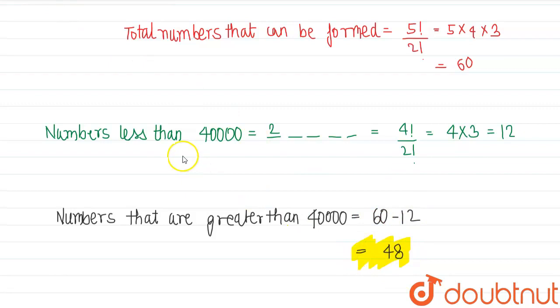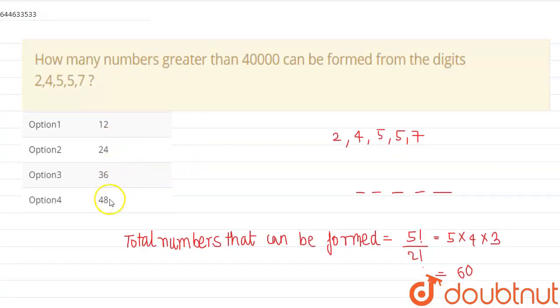So we can check our options. So from the options, option 4, that is 48, is correct. That's it, thank you.